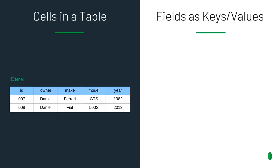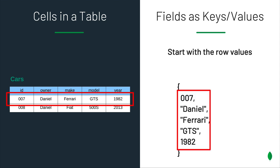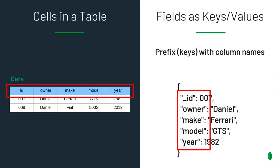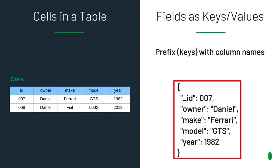You can liken the document to a row in a table. To go from the row to the document, you would start by extracting the values in the row. These values become the values in the document. The names of the columns become the names of the fields. Putting this together, we have a simple document. Because each document carries its list of fields, documents can have different lists of fields — we refer to that as documents having different shapes.